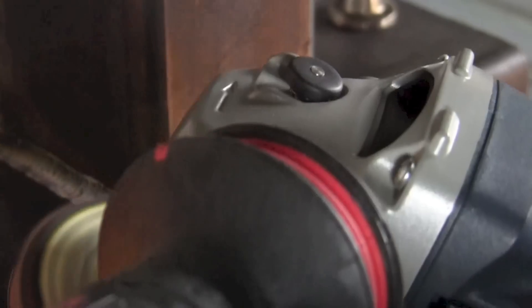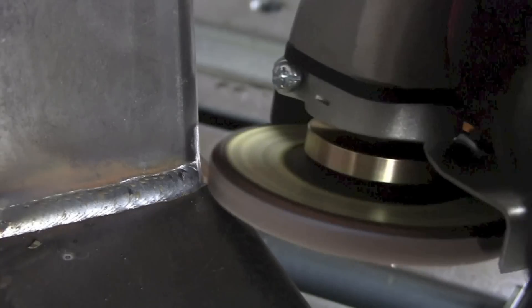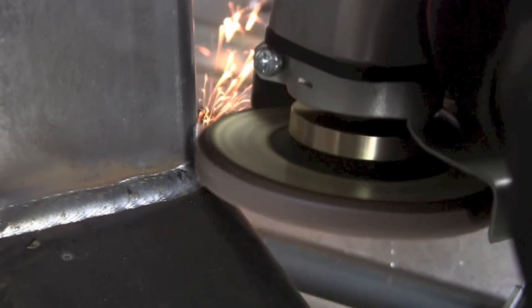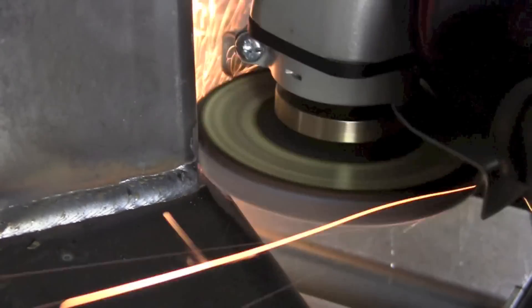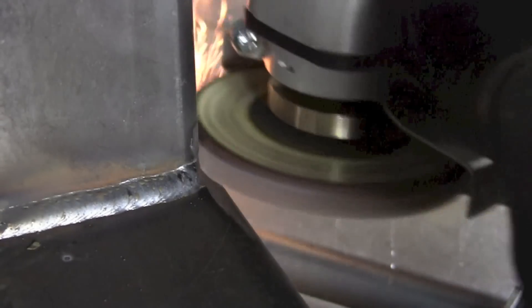So I used the edge of the flapper wheel to kind of taper off the end of the previous weld, and also the tack weld on the other side to get it cleaned up and ready to weld, so that I could tie in good at the ends of the weld when I made the next attempt.